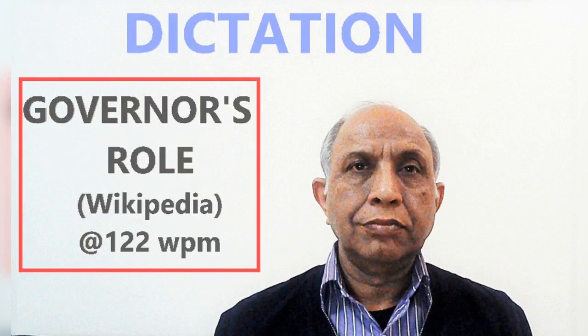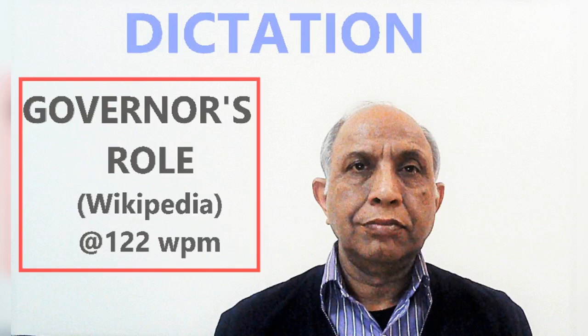The state head summons the sessions of both houses of the state legislature and prorogues them. The governor can even dissolve the state legislative assembly. These powers are formal and the governor's use of these powers must comply with the advice of the council of ministers headed by the chief minister. The governor inaugurates the state legislature by addressing it after the assembly elections and also at the beginning of the first session every year. The governor's address on these occasions generally outlines new policies of the state government. A bill that the state legislature has passed can become a law only after the governor gives assent.